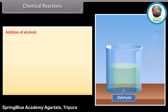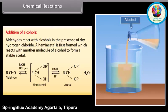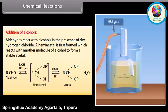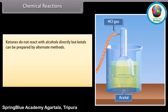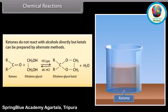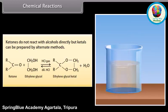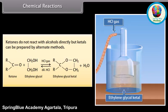Addition of alcohols: aldehydes react with alcohols in the presence of dry hydrogen chloride. A hemiacetal is first formed, which reacts with another molecule of alcohol to form a stable acetal. Ketones do not react with alcohols directly, but ketals can be prepared by alternate methods. Ketone reacts with ethylene glycol in the presence of hydrochloric gas to form an ethylene glycol ketal along with water.